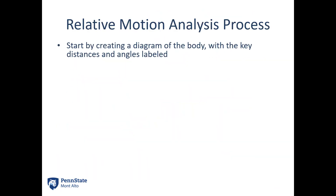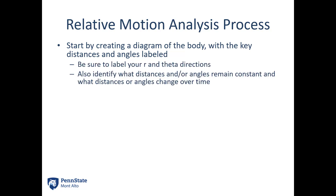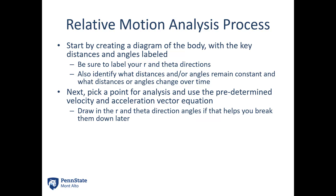General process: start by creating a diagram of the body with key distances and angles labeled. Be sure to label your R and theta directions, and identify which distances or angles remain constant versus which change over time — constants are written as numbers, changing quantities as variables. Next, pick a point for analysis and use the predetermined velocity and acceleration vector equations. For the robotic arm at point C, I had two simple rotations, so I pulled in the simple rotation equation for velocity twice — once for each rotating piece — and the same for acceleration.